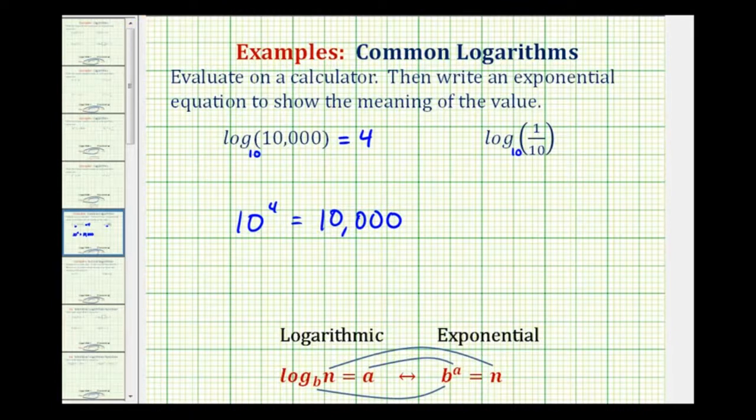This emphasizes that when we evaluate a logarithm we're actually finding an exponent. In this case it's telling us that ten to the fourth is equal to ten thousand.